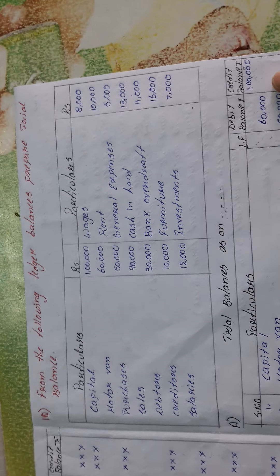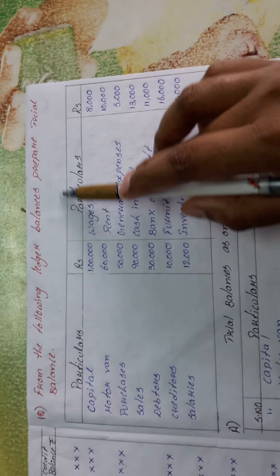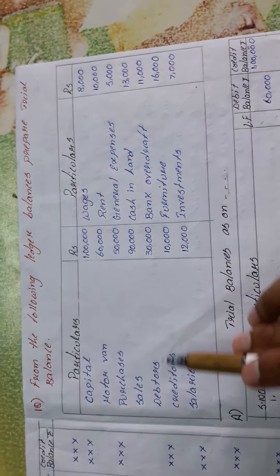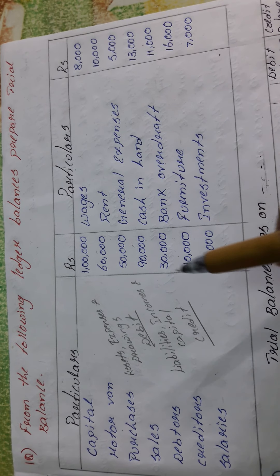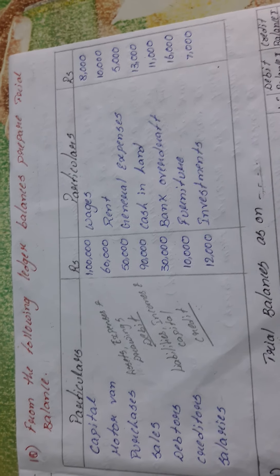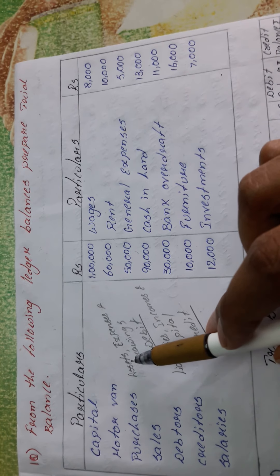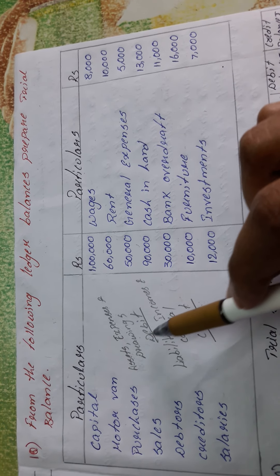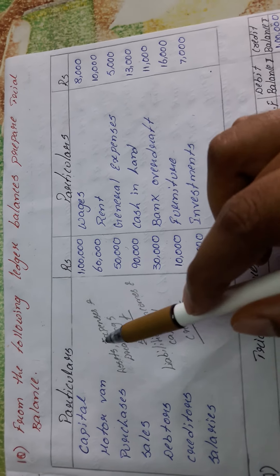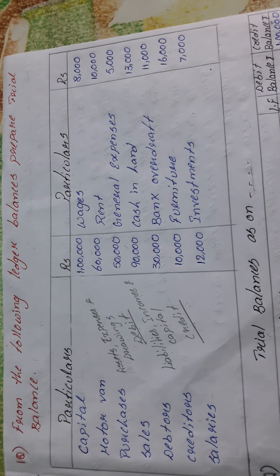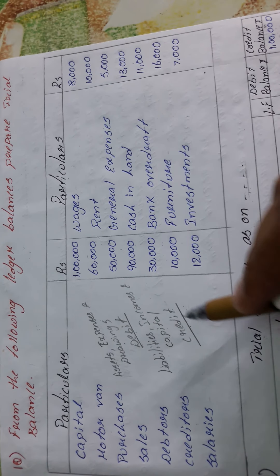Now we deal with a problem on trial balance. The question says: from the following ledger balances, prepare a trial balance. They have given capital, motor van, purchases, sales, debtors, and other amounts from the ledger, asking us to prepare a trial balance. In a simple format: whenever there are assets, expenses, or drawings we debit them; whenever there are liabilities, incomes, or capital we credit them.